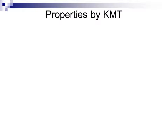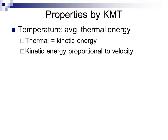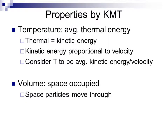We can look at gas properties through KMT analysis. Temperature is the average thermal energy of a substance. Thermal energy is a type of kinetic energy, and kinetic energy is proportional to the velocity of the particles. So temperature represents the average kinetic energy or average velocity of gas particles — the faster the particles move, the higher the temperature, and vice versa. Volume is the space through which the particles are free to move, and because particles don't interact, each particle acts as though it is the only one in the container.